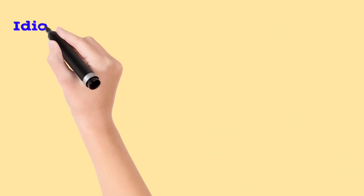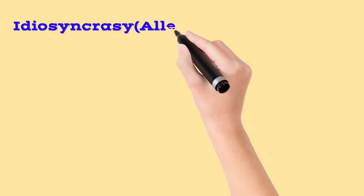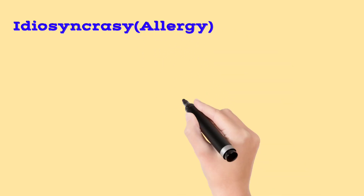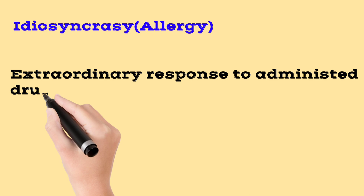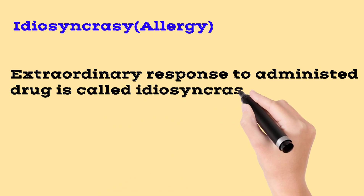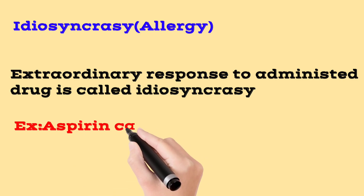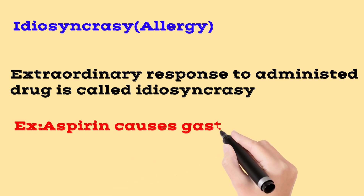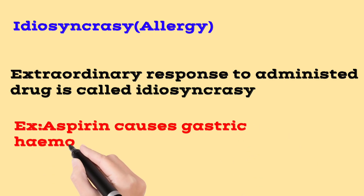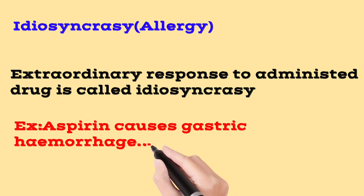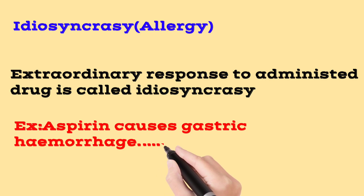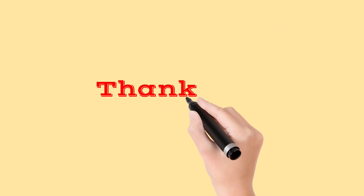Next is idiosyncrasy. Idiosyncrasy is when a drug produces an extraordinary response rather than its normal action — an abnormal response that can manifest as side effects. An example is aspirin, which commonly causes gastric hemorrhage in susceptible individuals. These are different factors related to the dose.